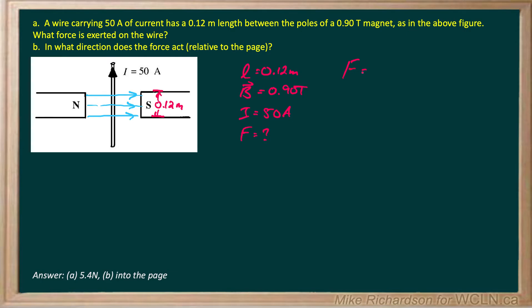Well, force for a current carrying wire is BIL, where B is the external magnetic field that's interacting with the magnetic field generated by the wire. So B is always the external magnetic field, I is the current, and L is the length immersed in the magnetic field.